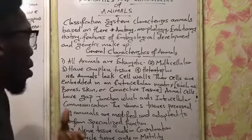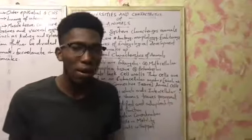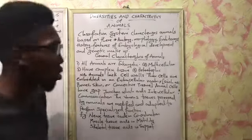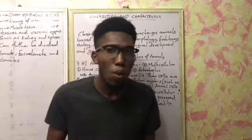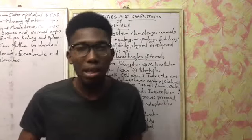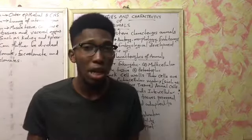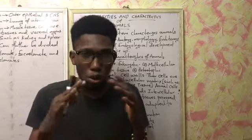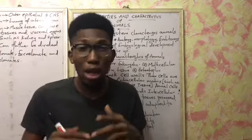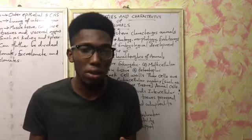Now animals have some general characteristics — they tend to show some general characteristics. Number one: all animals are eukaryotes. When we say eukaryotes, we mean organisms that have a true nucleus and nuclear membrane. All animals are eukaryotes.